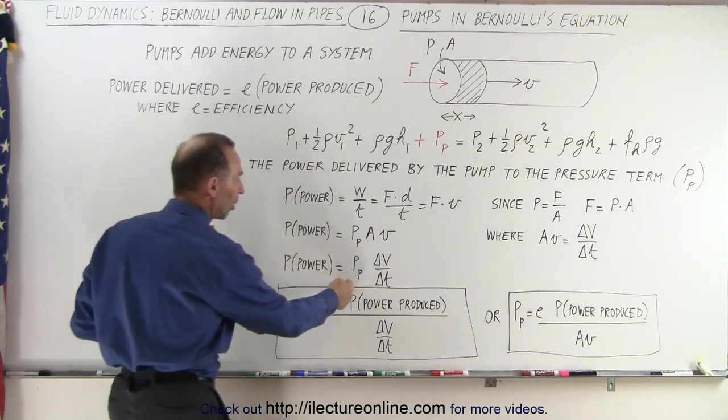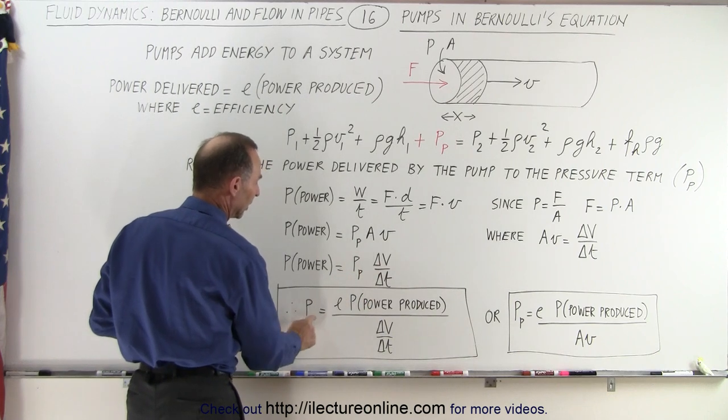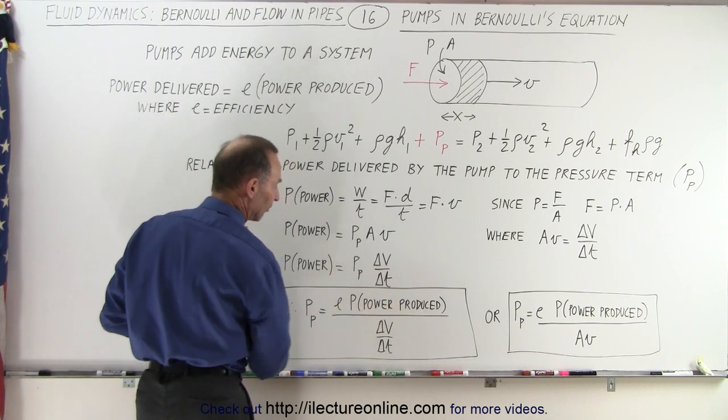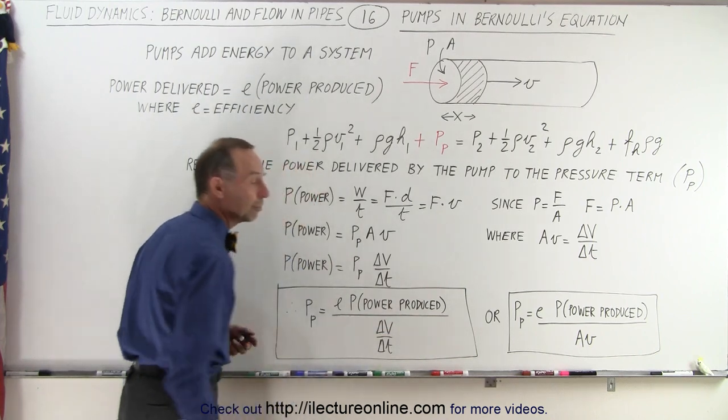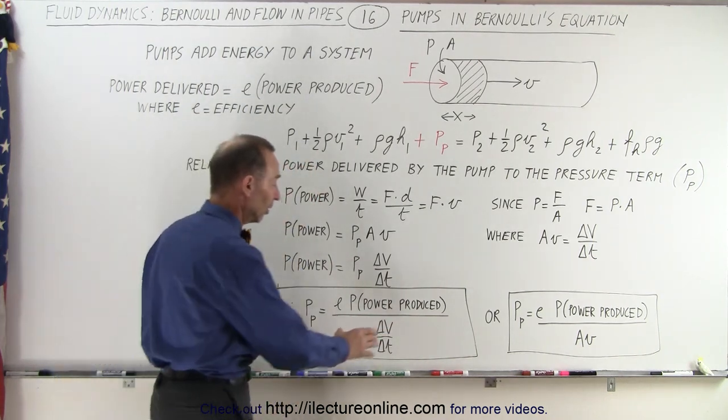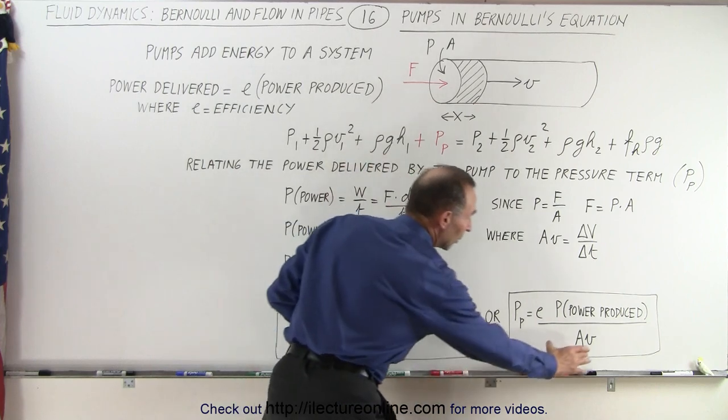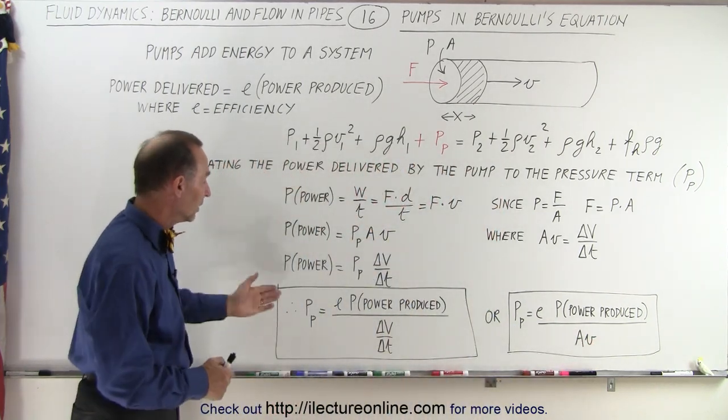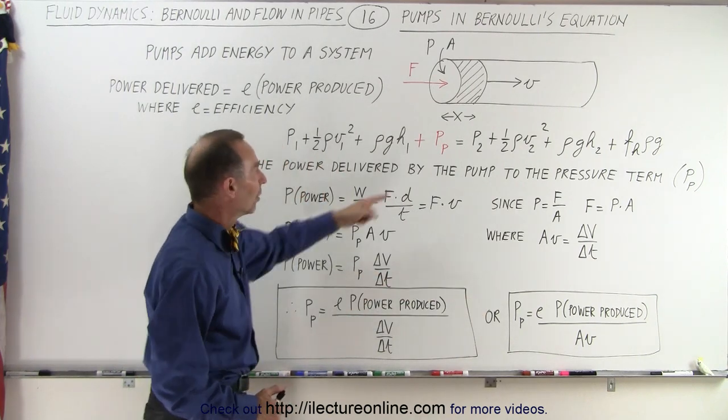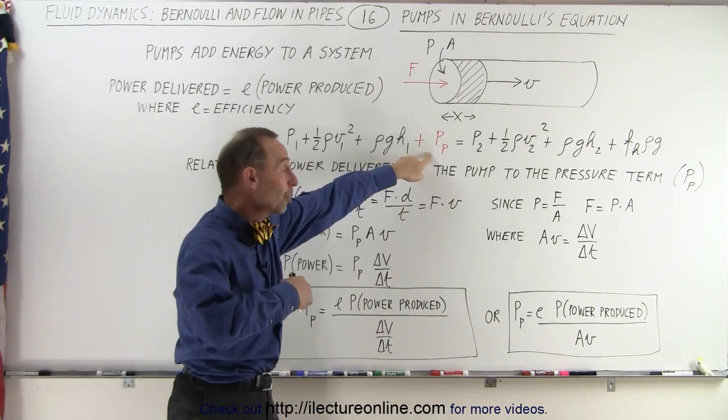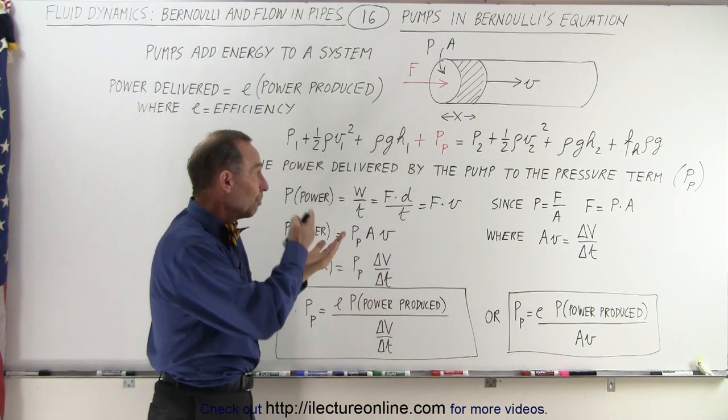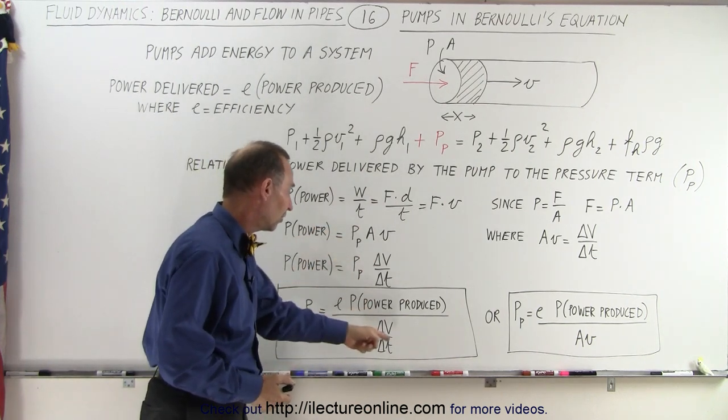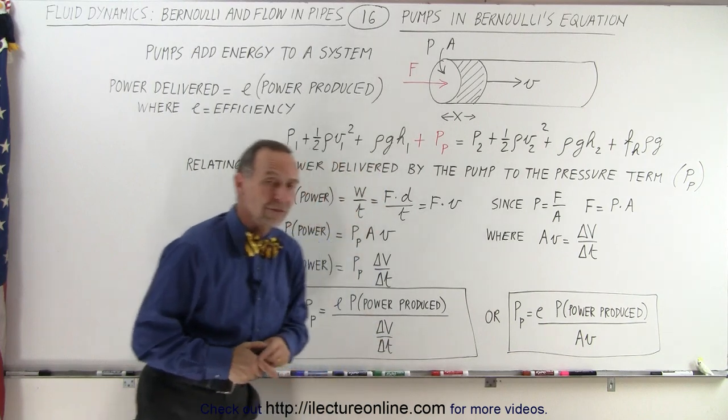Now, if we solve this equation for the pressure of the pump, it is equal to the power delivered, which is the power produced times the efficiency divided by the amount of fluid flow. Or instead of writing delta V delta T, we could write it as the cross-section area times velocity. Either way, this is how that term we add on the left side of the equation to indicate the pressure provided by the pump can be expressed.